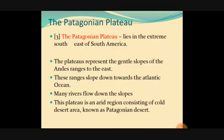The Patagonian Plateau lies in the extreme southeast of South America. The plateau represents the gentle slope of the Andes ranges to the east, sloping down towards the Atlantic Ocean. Many rivers flow down the slope. This plateau is an arid region — arid means waterless, like a desert or semi-desert. This is a cold desert, like Ladakh in India. Deserts can be hot or cold, and the Patagonian Desert is a cold desert.